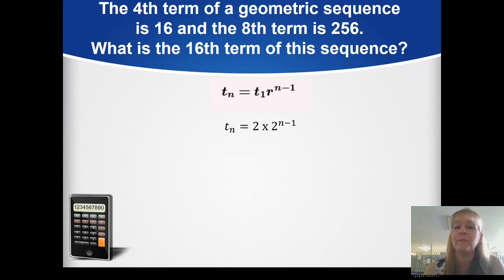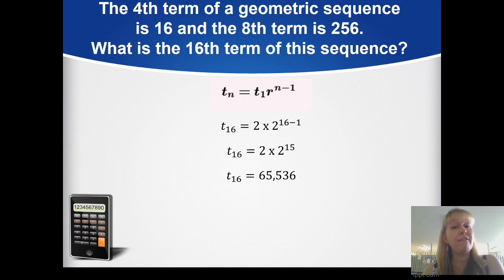Let's substitute into our original formula: tₙ = 2 × 2^(n-1). Since we need term 16, substitute n equals 16: t₁₆ = 2 × 2^(16-1) equals 2 × 2¹⁵. Evaluating on a calculator gives t₁₆ equals 65,536.